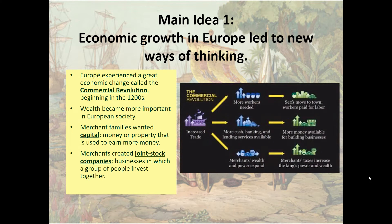Merchants created what were called joint stock companies — businesses in which a group of people would invest together. Rather than one person shouldering all of the burden of investing in a business opportunity, a large group of people would invest a small amount of money. Therefore, if the business succeeded, everybody would benefit, but if the business failed, everybody would only lose a little bit.